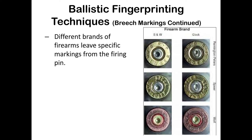Notice the difference: the Smith & Wesson firing pins on the left are round, while the Glock firing pins on the right have a rectangular shape with a dent on the inside. So if you find a cartridge case with that round mark, you know it wasn't a Glock, because Glocks leave a very particular shape. Different brands of firearms leave specific markings from the firing pin.